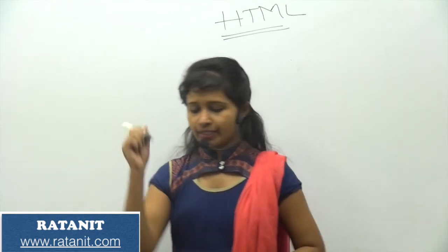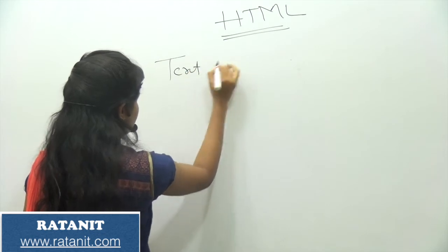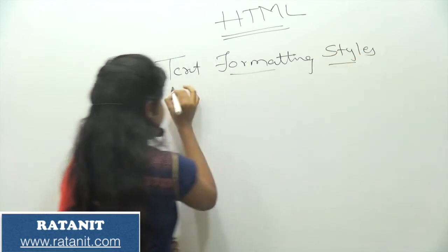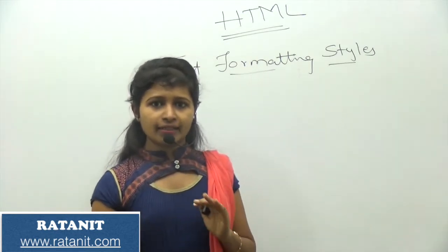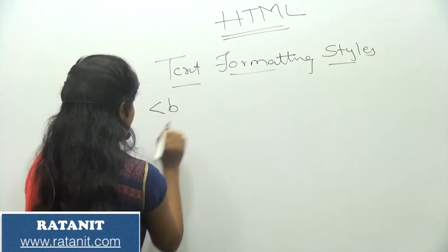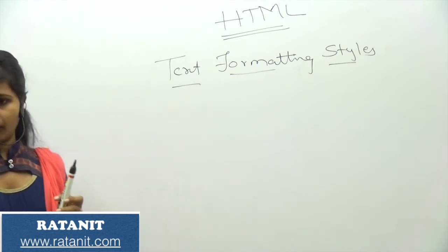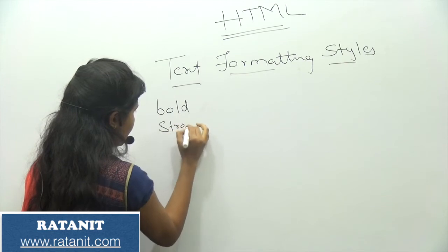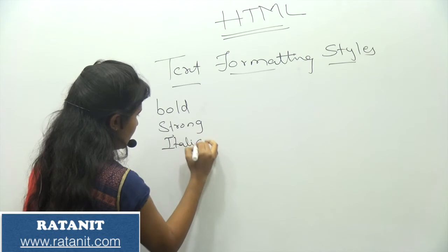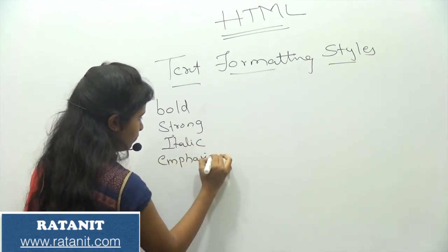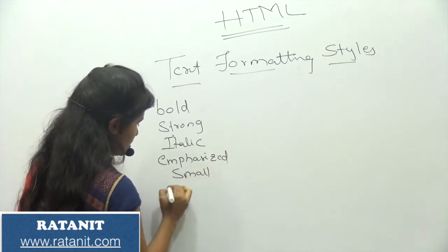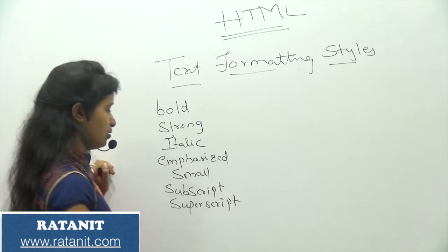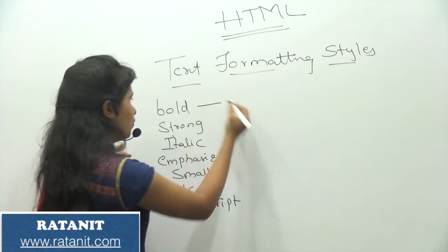Coming to the next topic: HTML text formatting styles. There are several text formatting styles. The first ones are bold and strong, then italic, emphasized, small, subscript, and superscript. These are the basic text formatting styles.